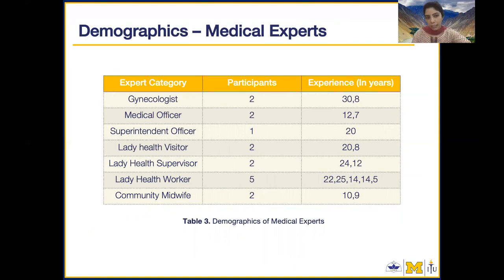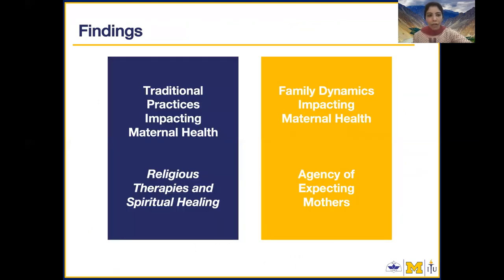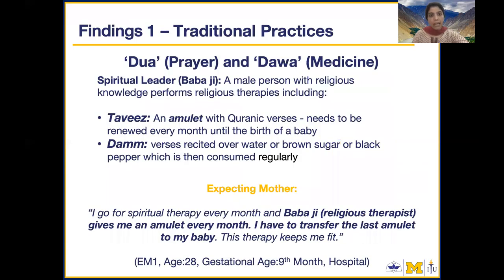Among the findings, we found two major things impacting the maternal health situation in Pakistan. The first is traditional practices, which includes religious therapies and spiritual healing. The second is family dynamics, which impact maternal health through the limited agency of expectant mothers to decide for their health during pregnancy. First, we'll talk about traditional practices.